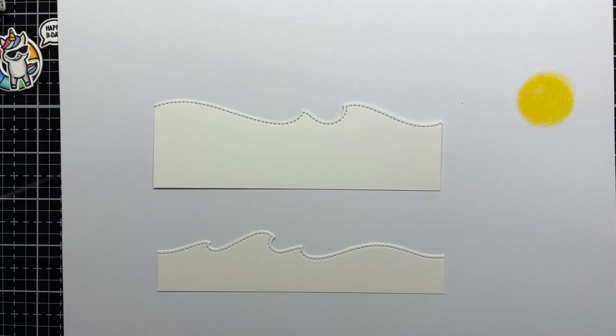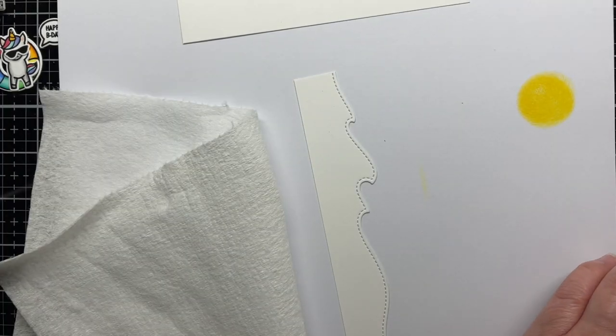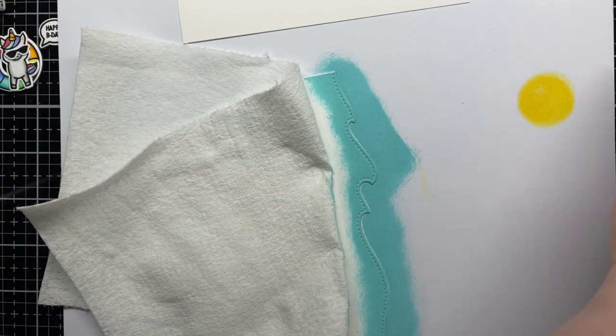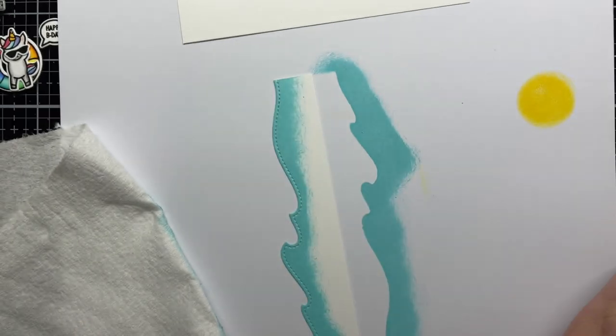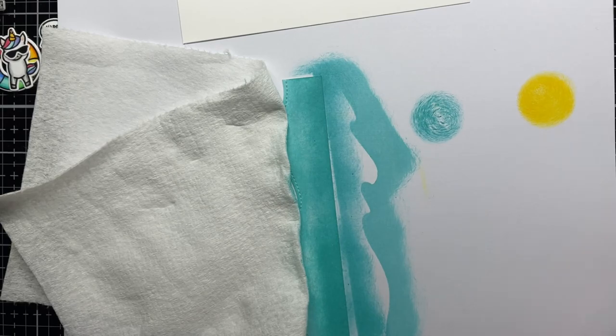Then I blend salvage patina, peacock feathers, and salty ocean Distress Oxide ink onto my smaller wave, and peacock feathers, salty ocean, and blueprint sketch Distress Oxide ink on my larger wave. I end up mostly covering up the peacock feathers on the larger wave and made it more blue instead of aqua.